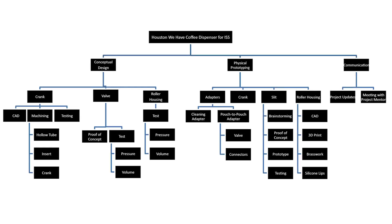This is an example of a work breakdown structure for Houston We Have Coffee. The team divided their project into three main design blocks: conceptual design, physical prototyping, and communication. Within each of these design blocks, they further subdivided into individual tasks.